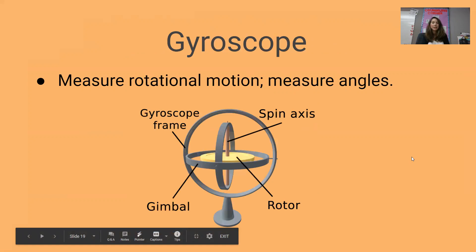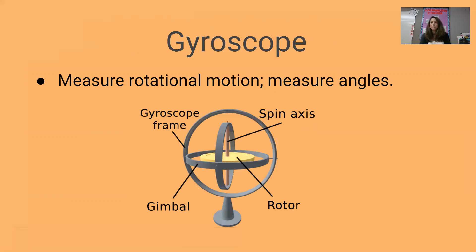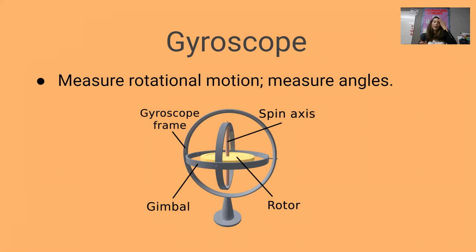The gyroscopic sensor was another sensor inside our Lego robot — it measures motion, specifically angles. When we needed to turn 45 degrees or 90 degrees, our gyroscopic sensor helped us figure out whatever the angle was. That can be very helpful when we need to move our robot around.